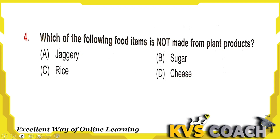Next question: which of the following food items is not made from plant products? Jaggery is made from sugarcane — a plant. Sugar is also made from sugarcane. Rice is a plant product. Cheese is obtained from milk, and milk comes from animals, so cheese is not a plant product. Option D — cheese — is the right answer.